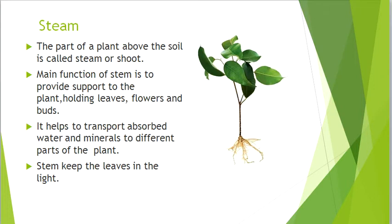Stem. The part of a plant above the soil is called the stem or shoot. The main function of the stem is to provide support to the plant, holding leaves, flowers and buds. It helps to transport and absorb water and minerals to different parts of the plant. The stem keeps the leaves in the light.